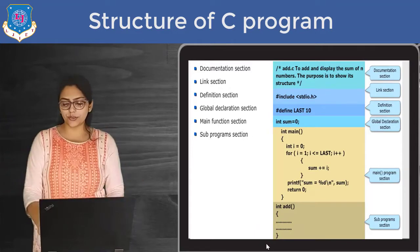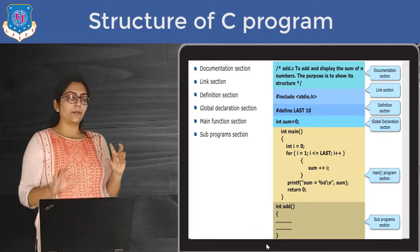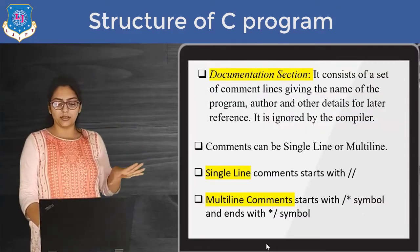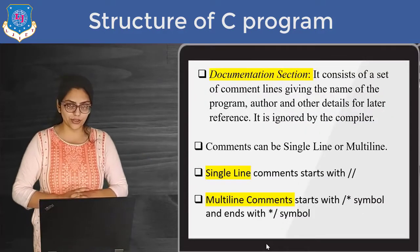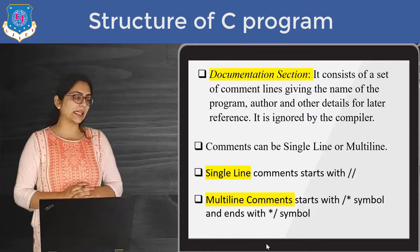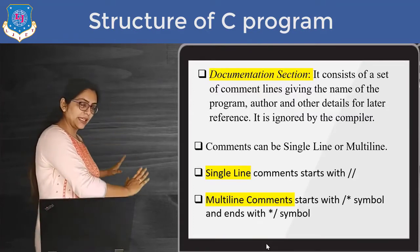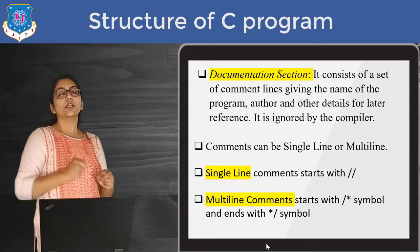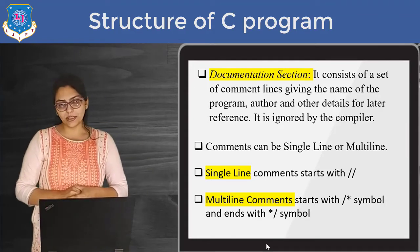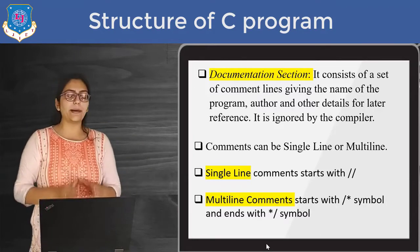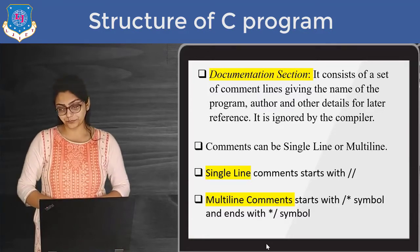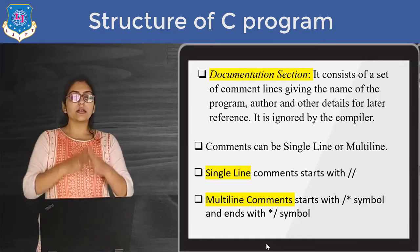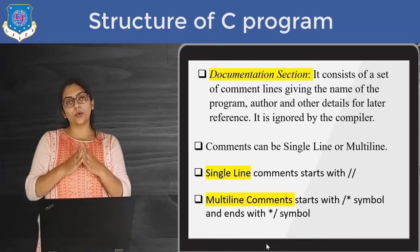So this is all about the structure of C. For the sake of your notes, I have covered this in a detailed way. First is the documentation section, which covers basically comments. There are two types of comments: first is single line and the other is multi-line. Now let me show you what exactly the single line comment looks like.